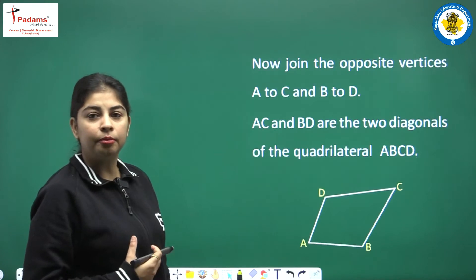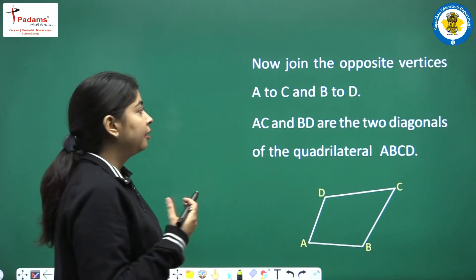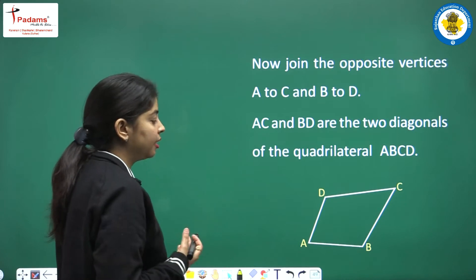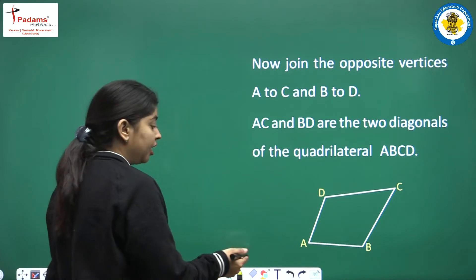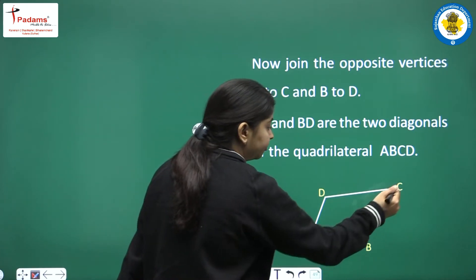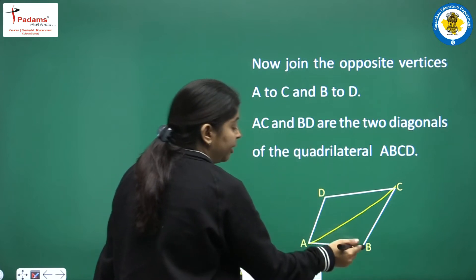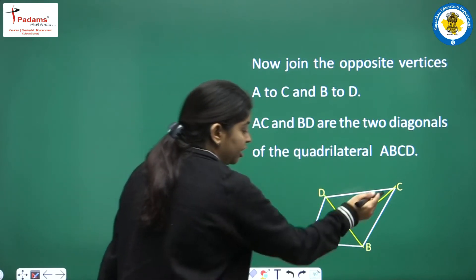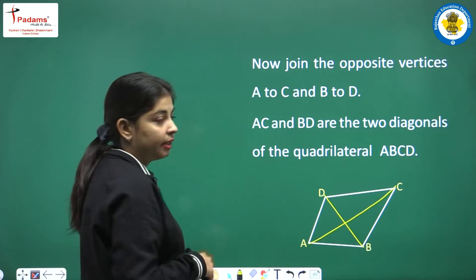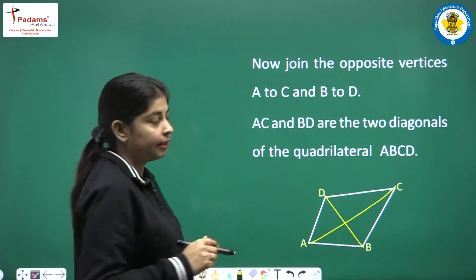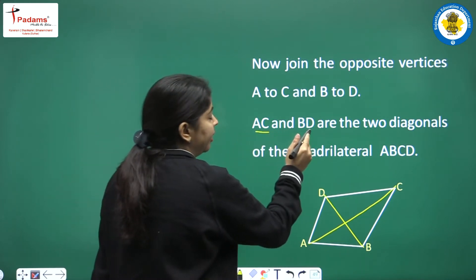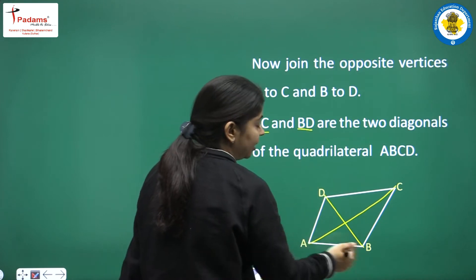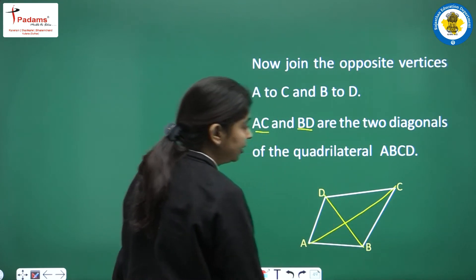Next, let's go. Now join the opposite vertices — join A to C, and join B to D. So what are AC and BD? We have two diagonals. AC and BD are the two diagonals of the quadrilateral ABCD.